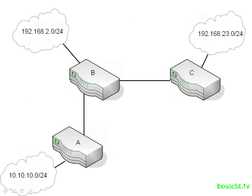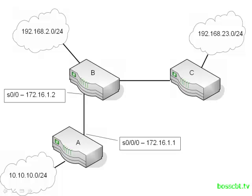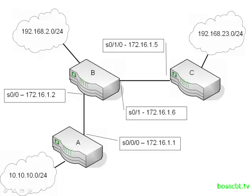Here's the network we're going to be working on. We have three routers — A, B, and C — and each one has a local area network connected to it. Each router is connected via a serial connection, and we're going to use a slash 30 in order to number our serial links. We'll start off by looking at how to create the default route by using a static route, and we'll do that on router A, configuring it to enable us to get to router B's local area network.